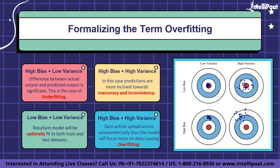A model with high variance pays a lot of attention to training data and does not generalize on unseen data — it performs very well on training data but has high error rates on test data. Graphically, there are four combinations. High bias and low variance: the predictions are consistently off-target — this scenario is considered underfitting. High bias and high variance: predictions are both inaccurate and inconsistent.